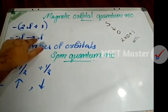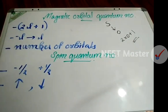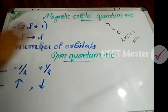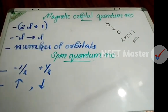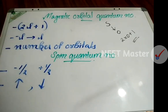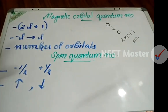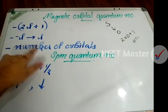The magnetic quantum number ml ranges from minus l to plus l, giving 2l+1 values. Now you can see the number of orbitals from this.